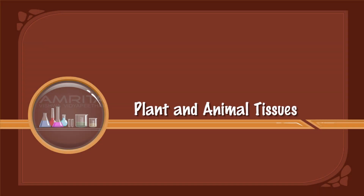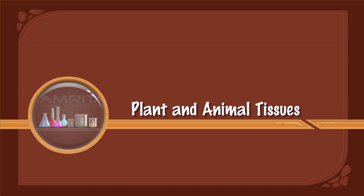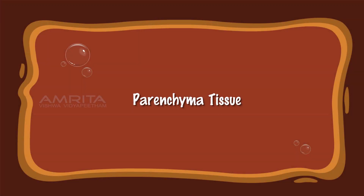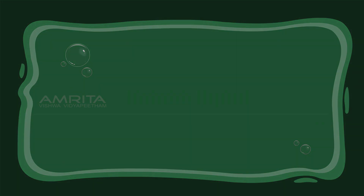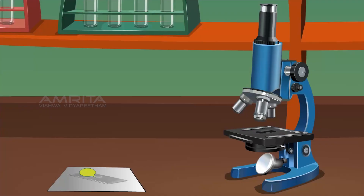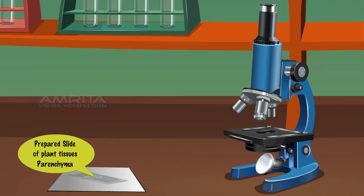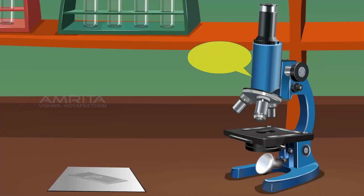Plant and Animal Tissues. Parenchyma tissue. Materials required: prepared slide of parenchyma tissue and a compound microscope.